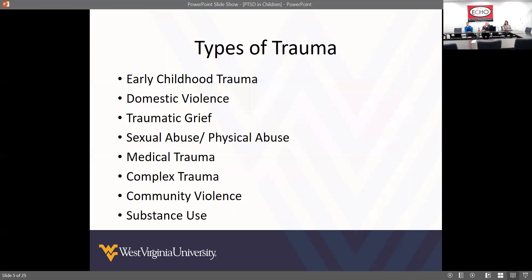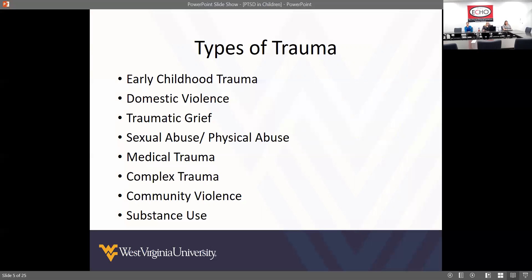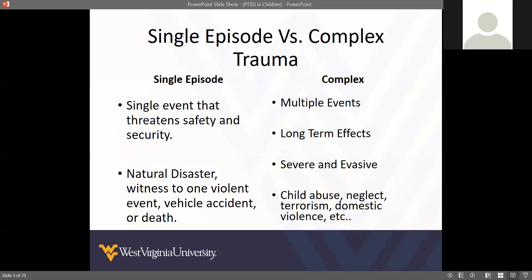There are all kinds of different types of trauma — early childhood trauma, violence such as domestic violence, exposure to community violence, violence within schools, bullying, traumatic grief, abuse, medical traumas, sometimes ongoing medical traumas. We see kids with PTSD experiencing invasive procedures that are ongoing even at young ages. Substance use disorder within the family is another big one.